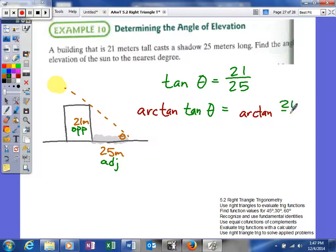We take the arctangent of both sides. This cancels the tangent, which is why we use inverse operations. So theta equals arctangent of 21/25.